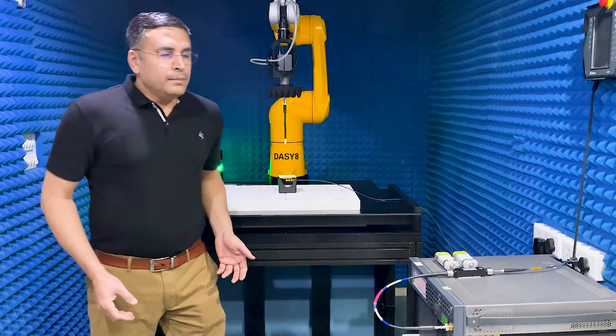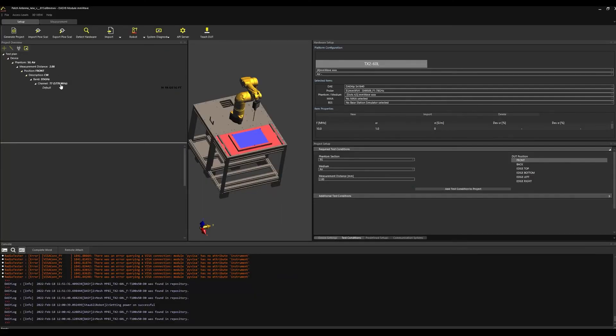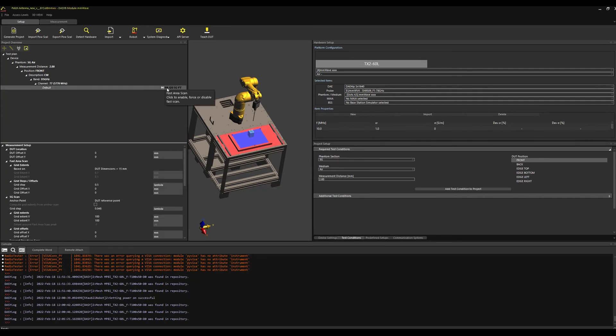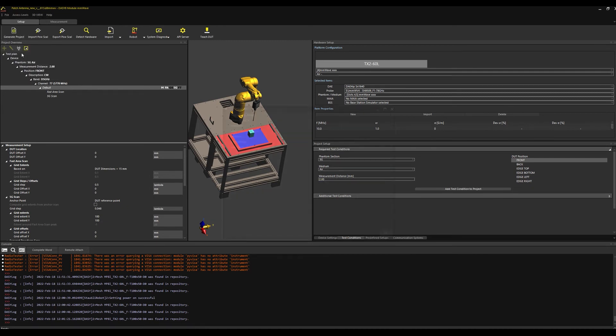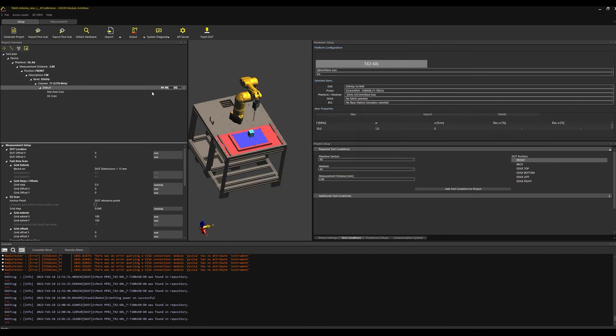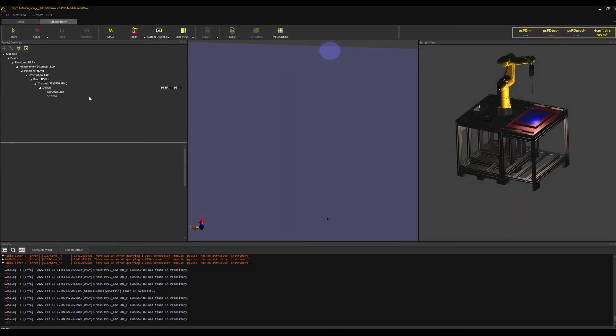The project setup in DAISY 8 or 6 module millimeter wave 3.0 consists of a fast area and 5G scan at 2 millimeter from the surface. The equivalent sources algorithm is enabled from the preferences. The other settings are left to default values.